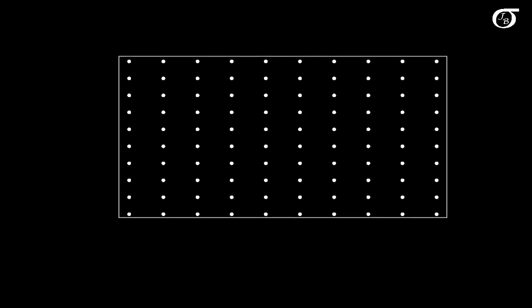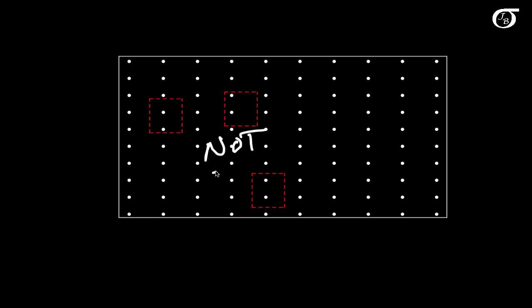On the other side of things, what if they're evenly distributed — uniformly distributed — not random, in nice rows and columns? If we randomly pick a box, we get two occurrences. Pick another one, two occurrences again. Pick another, two occurrences again. We don't have that variability — we're not getting zero sometimes and more other times. So here again we do not have a Poisson distribution.